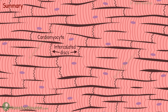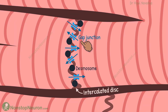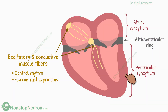Now let's have a quick summary. Multiple cardiomyocytes connect at intercalated discs to make cardiac muscle. Inside, they have myofibrils and a transverse tubule system, similar to that in skeletal muscle. The special thing is the large number of gap junctions at the intercalated discs make the cardiac muscle a syncytium. The atrial and ventricular syncytium are separated by fibrous tissue called the atrioventricular ring. Excitatory and conductive fibers play a role in controlling rhythm and don't participate much in the contractile process.